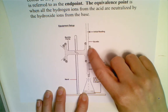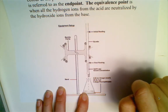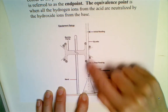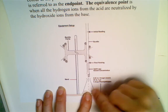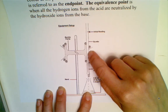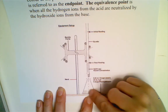Whatever substance goes into the burette is called the standard — it is the one that you know the concentration of. You can't have two unknown concentrations; if you're trying to find the concentration of an unknown, you must know the concentration of what you are titrating it with.